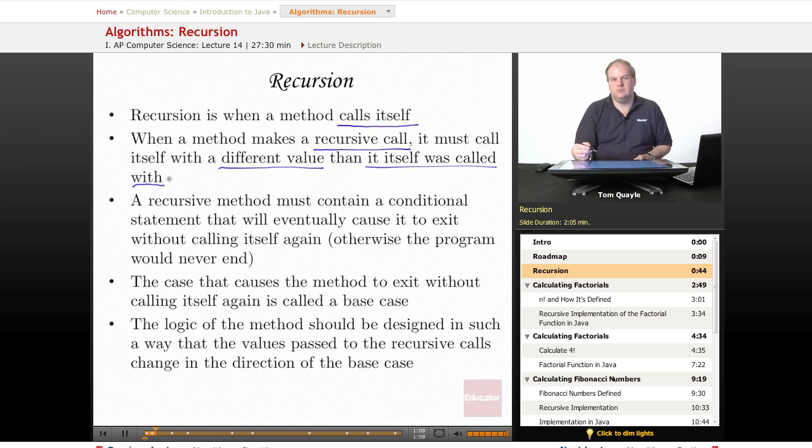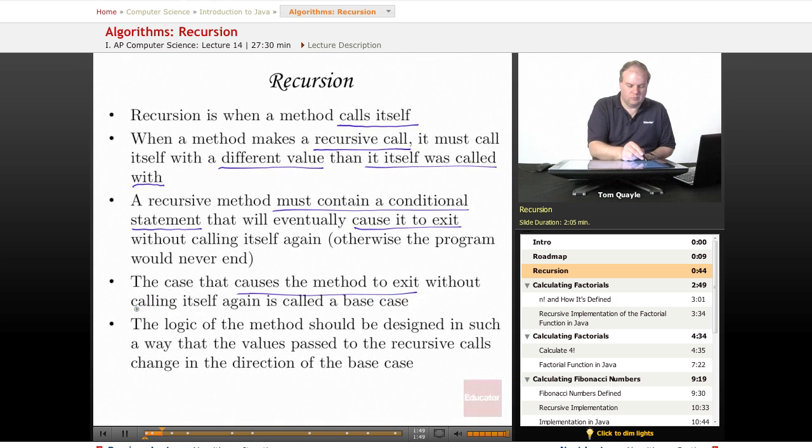Recursive functions must take at least one parameter so that the value can be changed from one call to the next, and a recursive method must contain a conditional statement, such as an if statement, that will eventually cause it to exit without calling itself again. If the only thing your recursive method does is call itself again, the program would never end, and we call that an infinite loop. Eventually you just have to kill the program if it's running in an infinite loop. So to prevent that from happening, we want to be sure that we have a case that causes the method to exit without calling itself again. And such a case is called a base case.